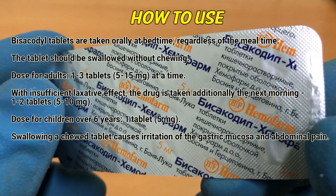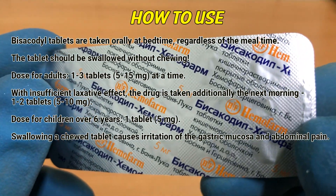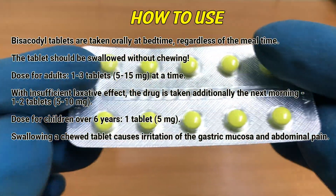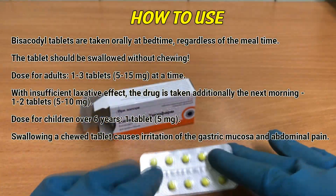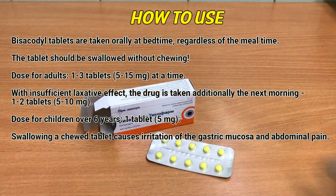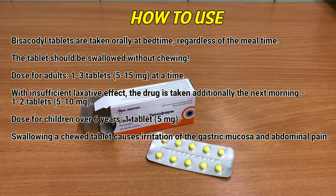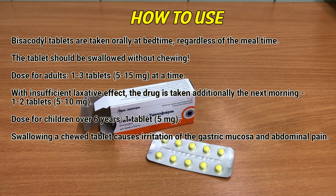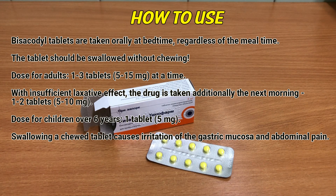How to use: Bisacodyl tablets are taken orally at bedtime, regardless of meal time. The tablets should be swallowed without chewing. Dose for adults: 1–3 tablets, 5–15 mg at a time. With insufficient laxative effect, the drug is taken additionally the next morning, 1–2 tablets, 5–10 mg.